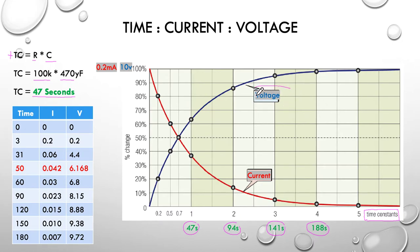The blue curve is the voltage and the red curve is the current. On the left hand side, I've got percentage, but it also represents 10 volts. So 100% is 10 volts, 50% is 5 volts, 10% is 1 volt.